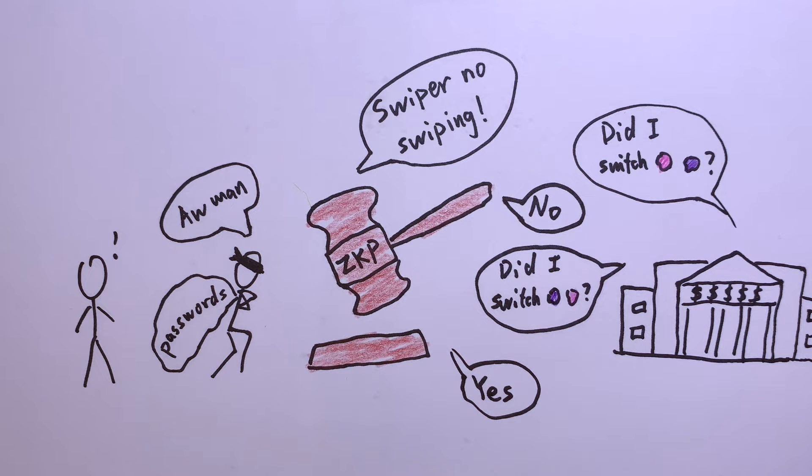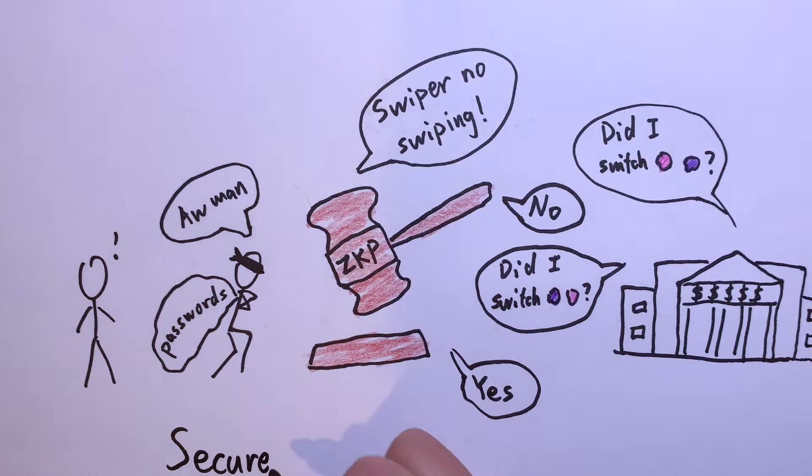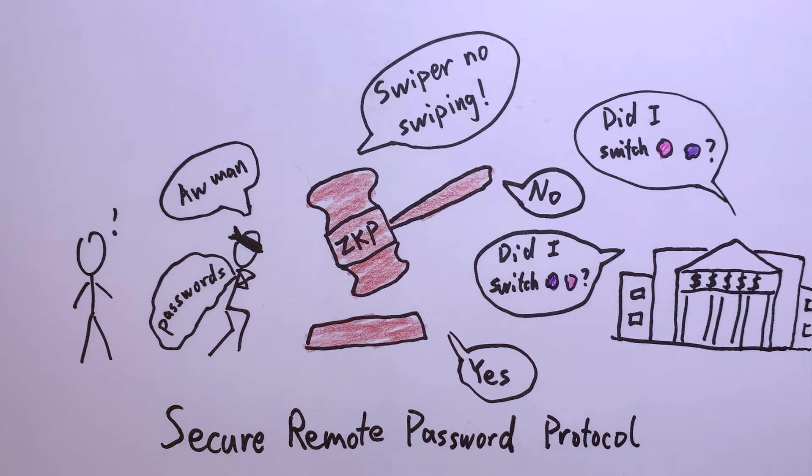Phishing, the most common cybercrime of 2020, would be eliminated completely. What's more, a zero-knowledge proof password protocol, SRP, already exists. Shame on you, everyone who doesn't use it yet.